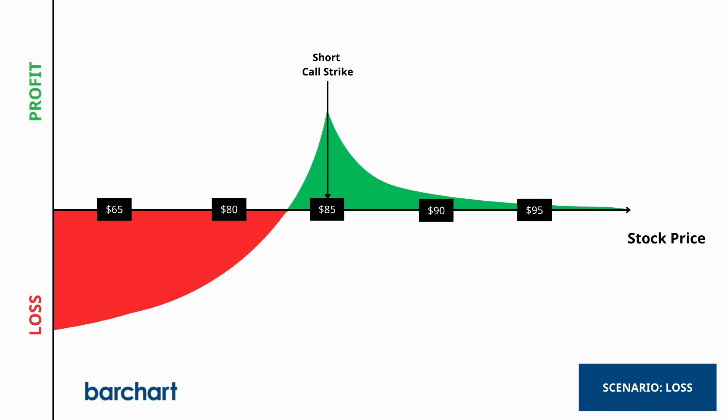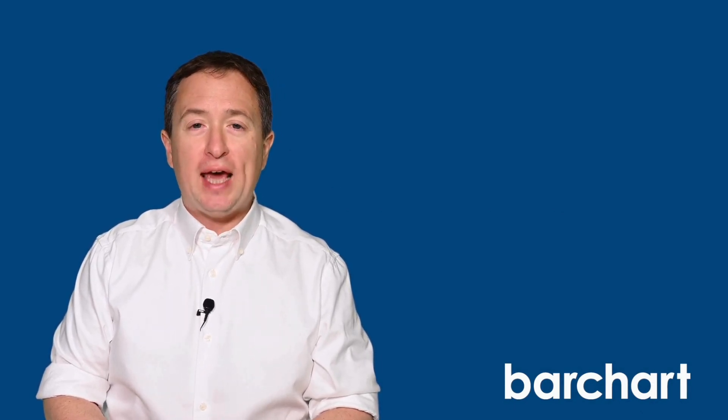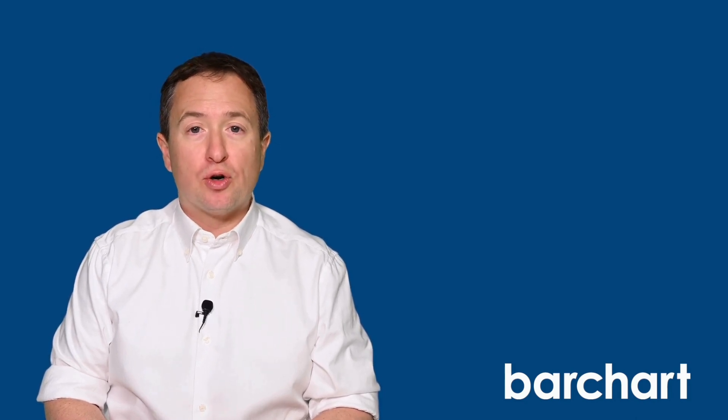Let's say, for example, the stock falls to $65. In that scenario, both calls are out of the money and will have little to no extrinsic value. If there is a little extrinsic value, you can close out the trade with a sell to close order on the long option and a buy to close order on the short call. However, you'll want to be sure that the trading fees don't exceed the premiums, as is often the case.